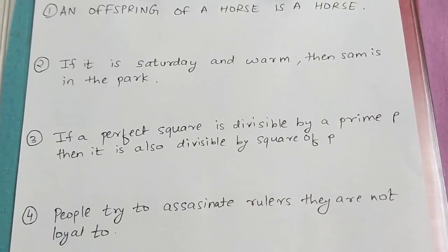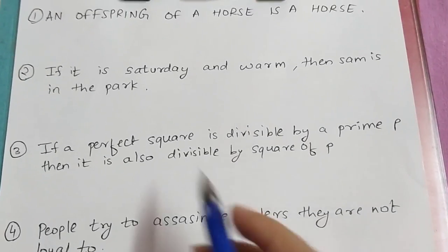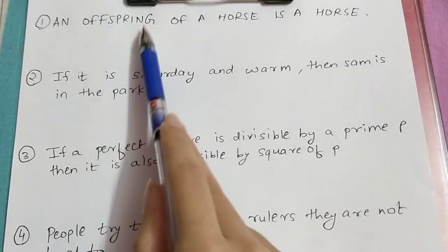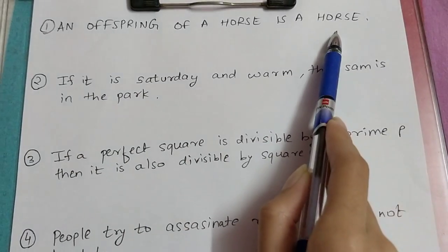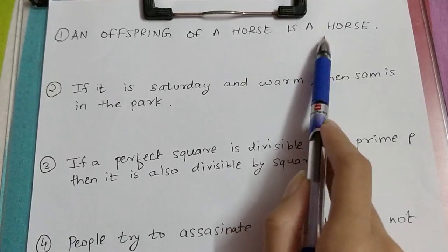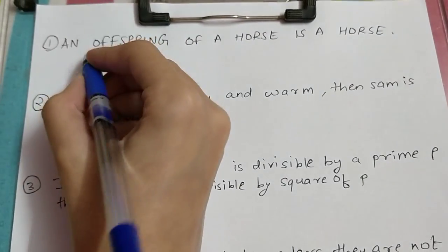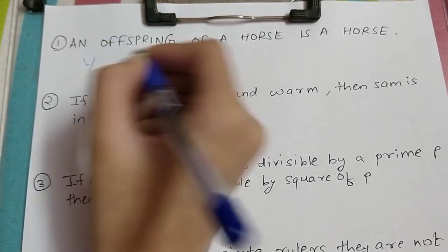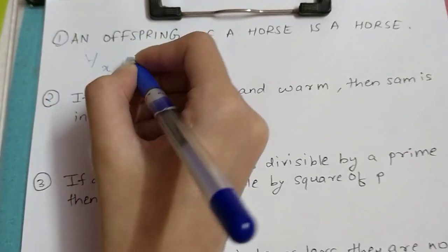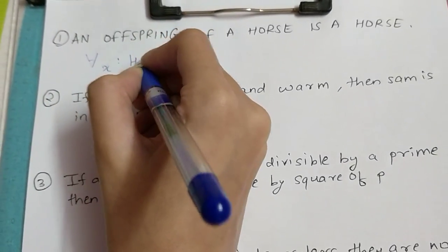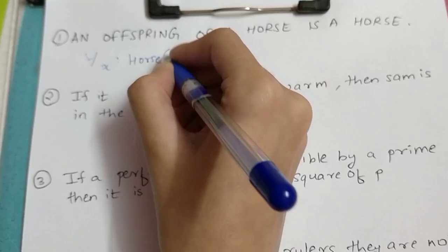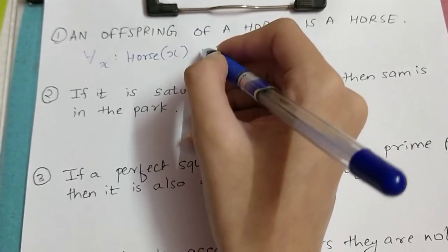We will see a few examples. We are going to solve tougher ones. Let's do it. Our first question is: an offspring of a horse is a horse. So we will write for all X, horse(X).